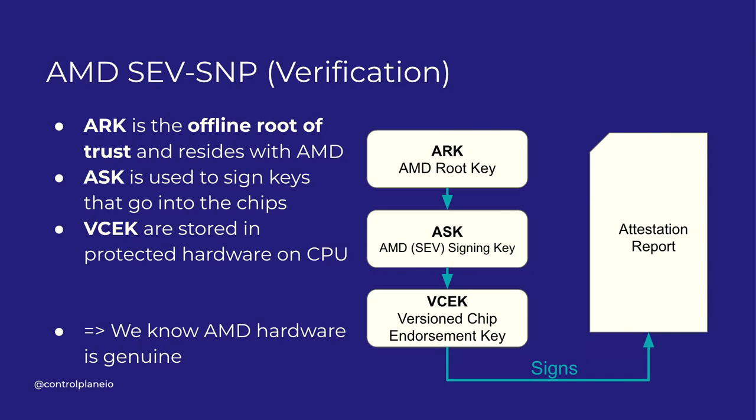The verification uses standard X.509 certificate structures familiar from TLS. AMD has a root key stored offline, probably in an HSM, and this is the root of trust. It signs subsequent keys: AMD signing keys are in the factories, and the final key is the Chip Endorsement Key (CEK) baked into each chip, which the security processor uses to sign the attestation report. Each key signs a certificate for the next one, so we can walk up the chain in reverse, verify each signature, and confirm the attestation report came from genuine AMD hardware.